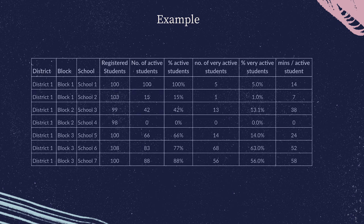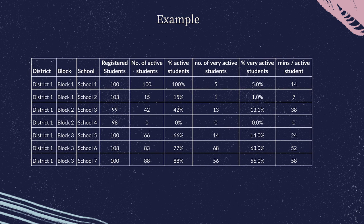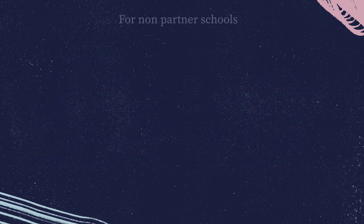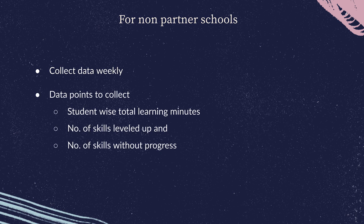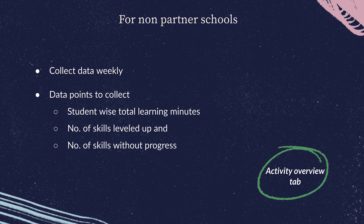If your school is a state partner with Khan Academy, you will receive usage tracker data for your block or district schools from the Khan Academy team. This data covers active students, very active students, learning minutes spent on the platform, and more. If you are a mentor of a private school that is not a state partner, you need to review all data weekly by requesting the following from your teachers: student-wise total learning minutes, number of skills leveled up, and number of skills without progress. Teachers can get this data from the activity overview tab of the class. Assign a day every week for teachers to collect this data.